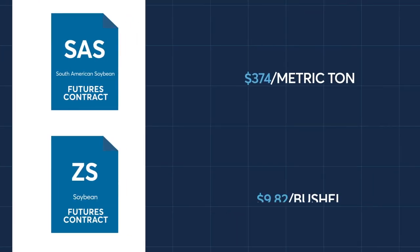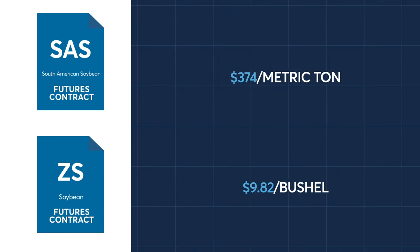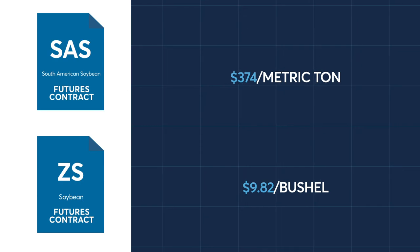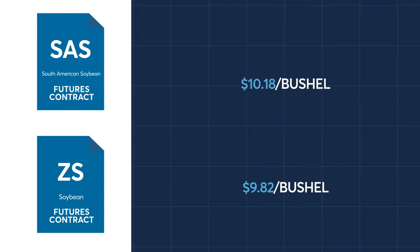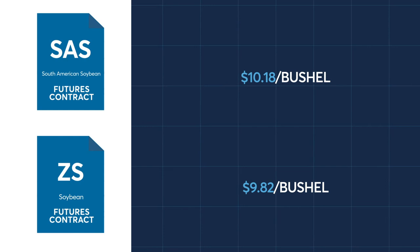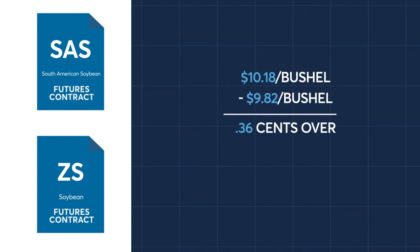As an example, let's assume the South American contract is trading at $374 per metric ton and the U.S. contract is trading at $9.82 per bushel. Converting the Brazilian price from metric tons to bushels gives us a value of $10.18. Subtracting the U.S. soybean futures price of $9.82 gives us a BASIS of $0.36 over.